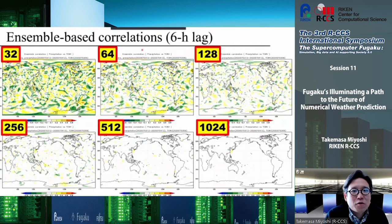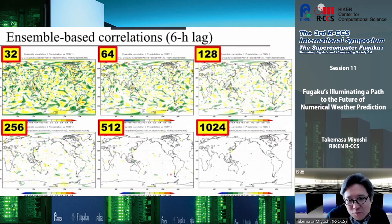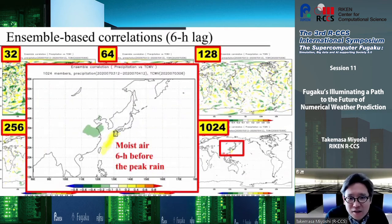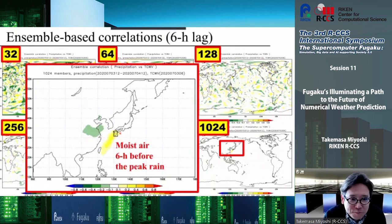We can also take ensemble-based correlations to find the reason for the heavy rain. This is a six-hour lag correlation between heavy precipitation and the moisture distribution. With a thousand ensemble members we remove most of the noise, but with fewer members we have a lot of sampling-error noise — even 500 still shows noise. Focusing on the heavy rain area, six hours before the event we see moist air distributed in one region and dry air in another area corresponding to an upper-level trough, which is also important to intensify the rain system.